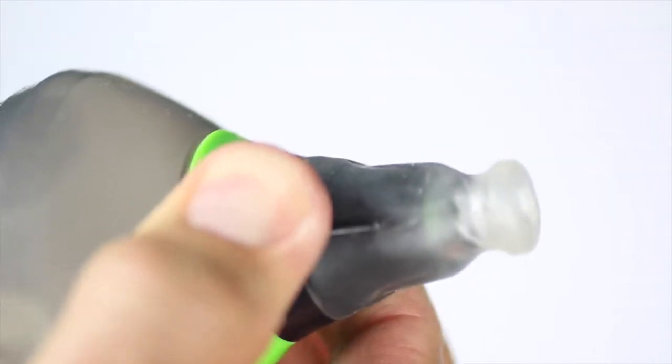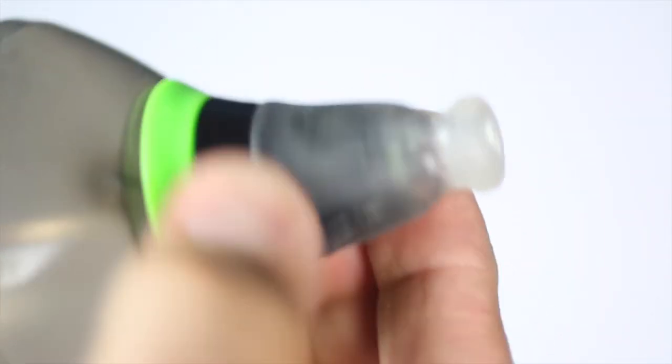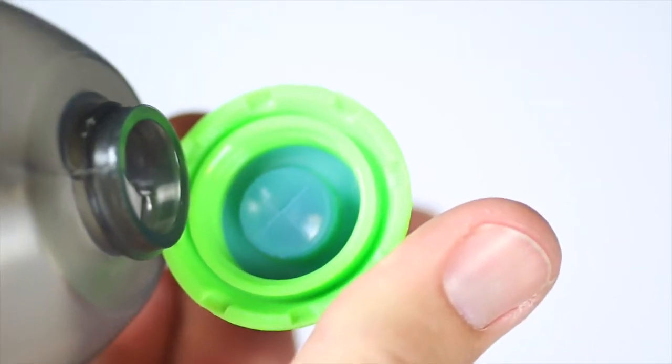Near the spout, there is a leak lock valve that prevents spills from happening. This is done by simply turning the mouthpiece, which stops the flow of liquids.